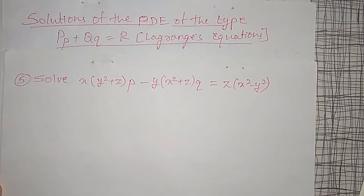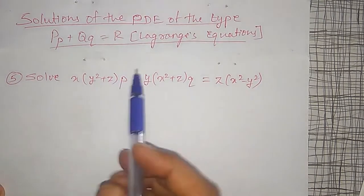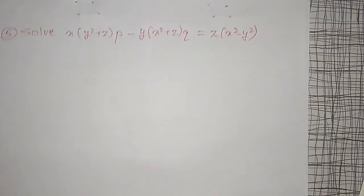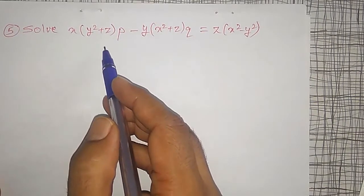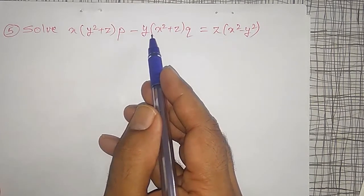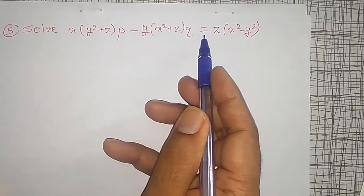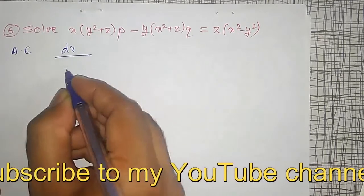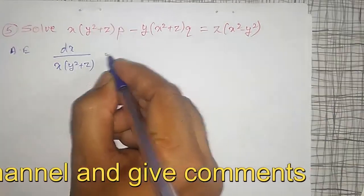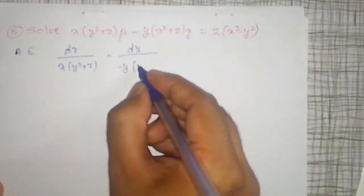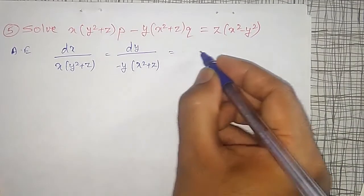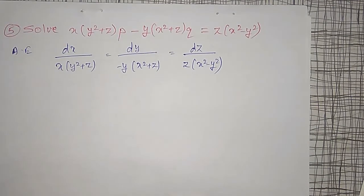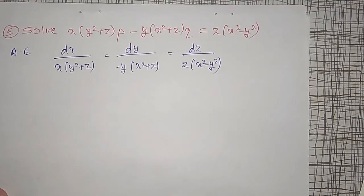Welcome friends. Here are two more examples on solution of the PDE of the form PP + QQ = R type. The example is X(Y² + Z)P minus Y(X² + Z)Q equal to Z(X² - Y²). The auxiliary equation is given by dx divided by X(Y² + Z), dy divided by minus Y(X² + Z), equal to dz divided by Z(X² - Y²).